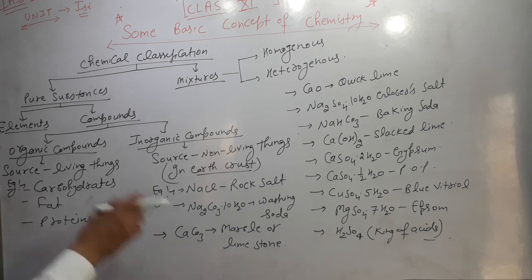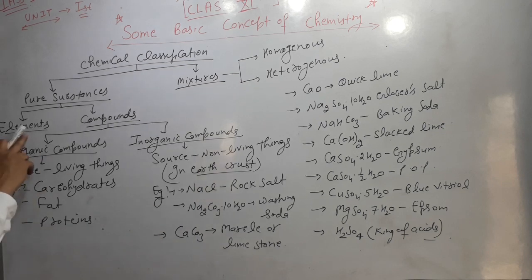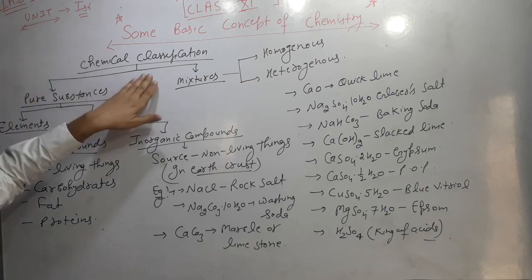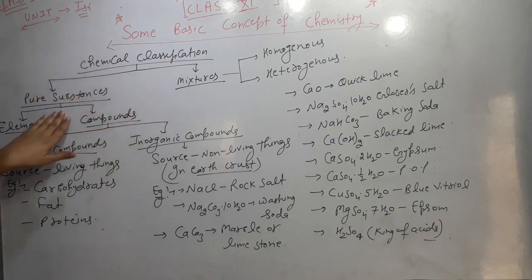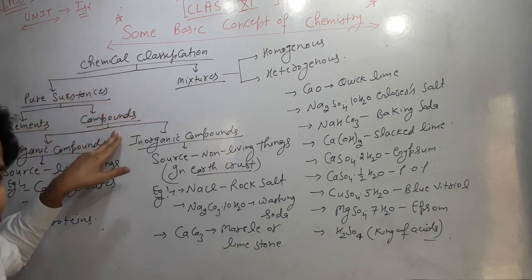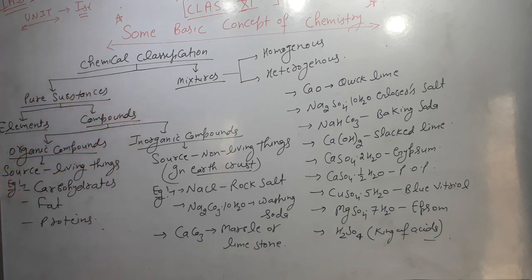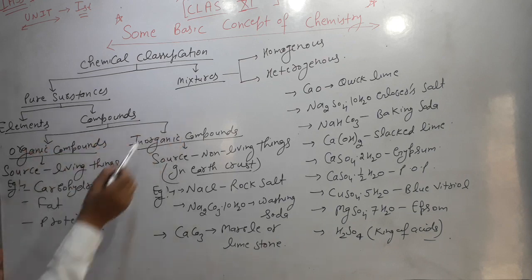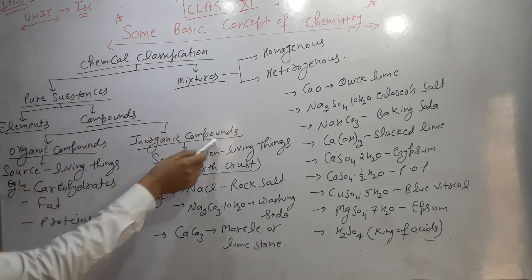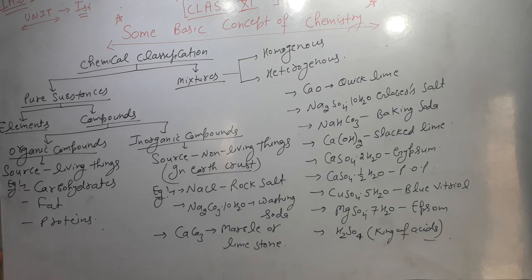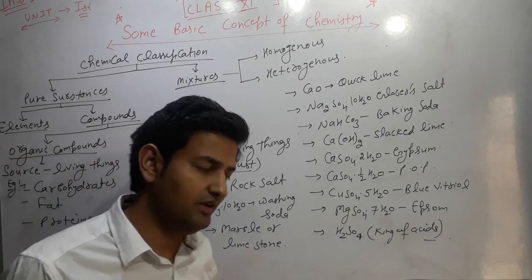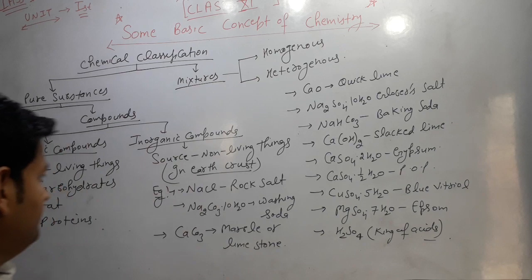So students, this is all about elements — metals, non-metals and metalloids. Now in chemical classification of pure substances, the second type is compounds. Compounds are of two types: organic compounds and inorganic compounds.